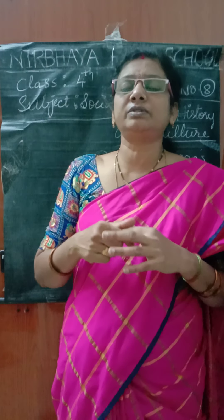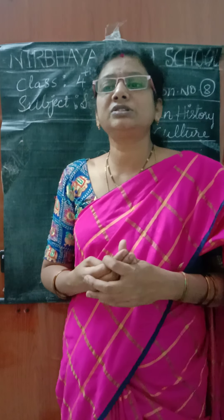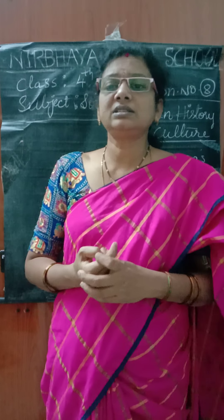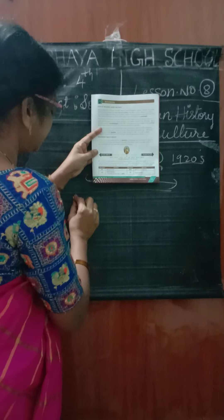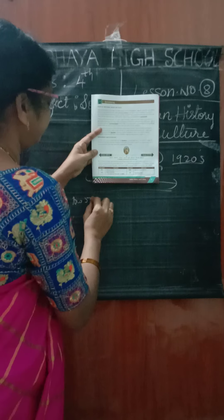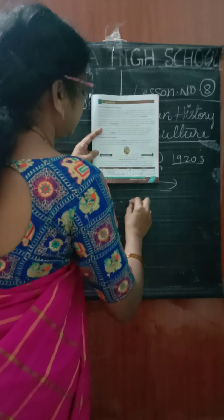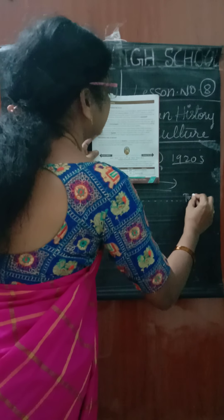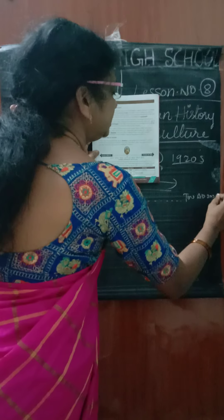The people of the Indus civilization were mostly farmers. Some of them were artists who made sculptures, seals, and pottery. There were also metal workers who made gold jewelry and bronze. The Indus civilization is also called the Harappan civilization because the ruins of this civilization were first discovered in Harappa.